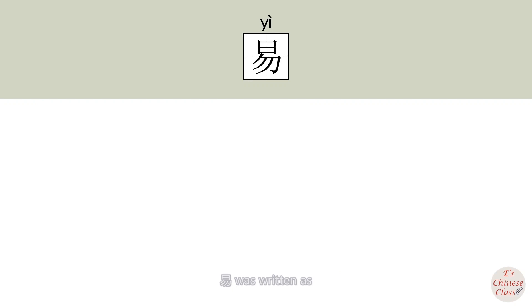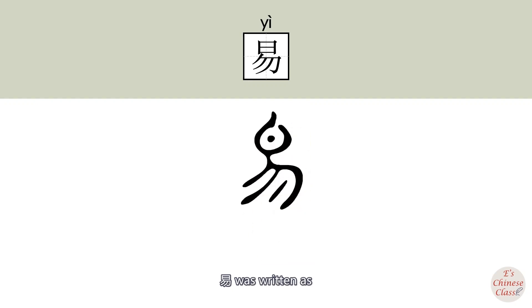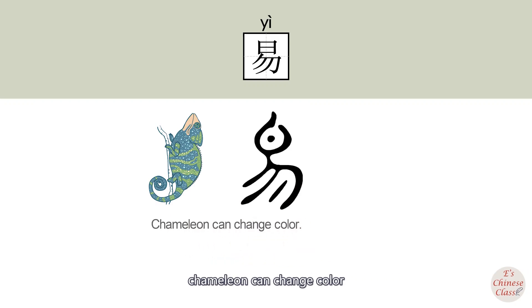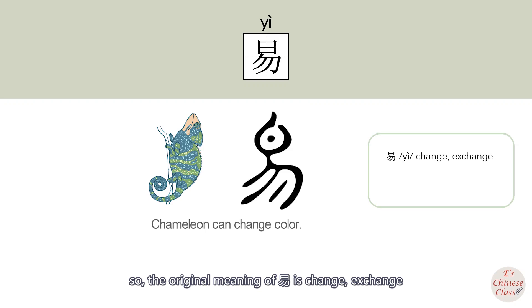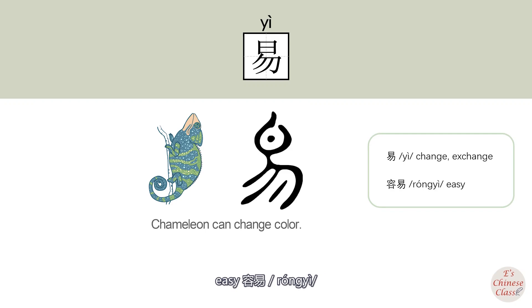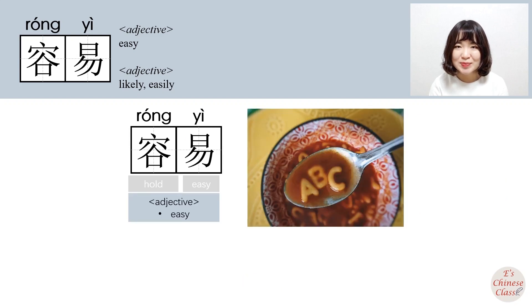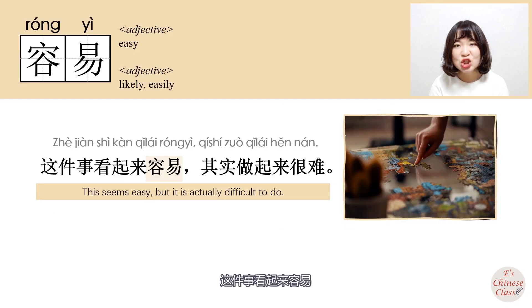In ancient Chinese, 易 (yi) was written as a chameleon. A chameleon can change color.